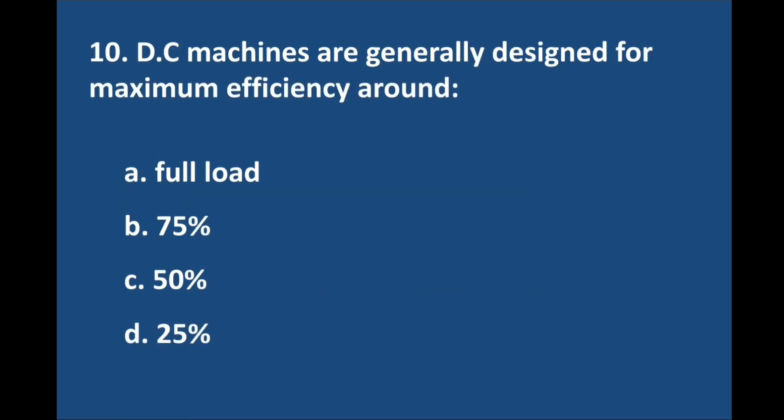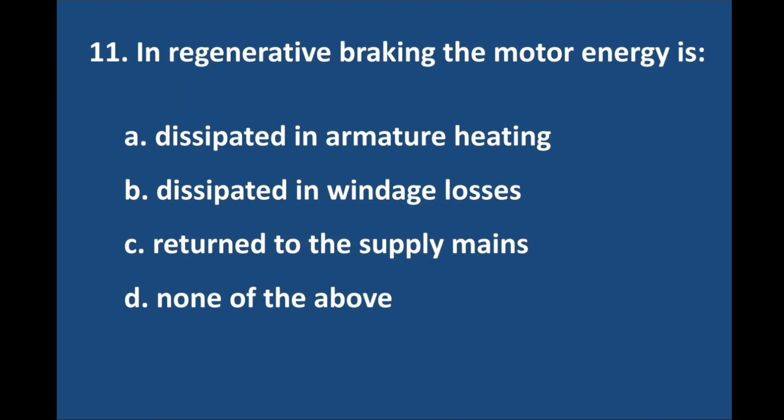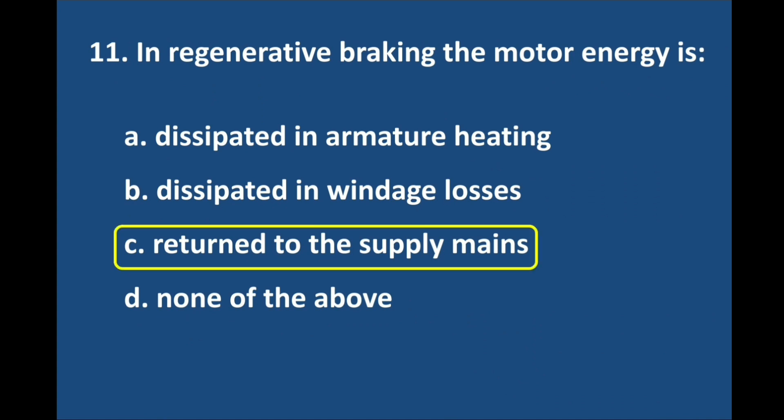Question number 10. DC machines are generally designed for maximum efficiency around — answer is option A: Full load. Question number 11. In regenerative braking, the motor energy is — answer is option C: Returned to the supply mains.